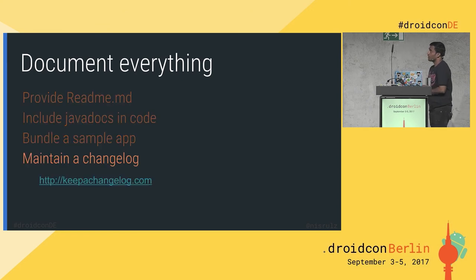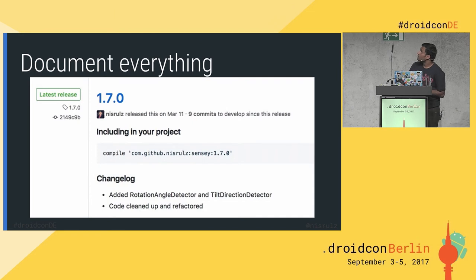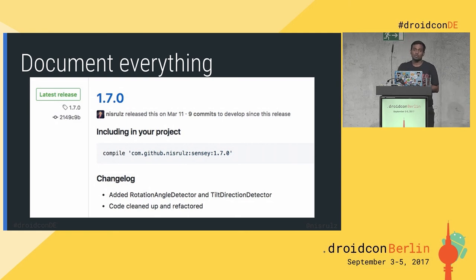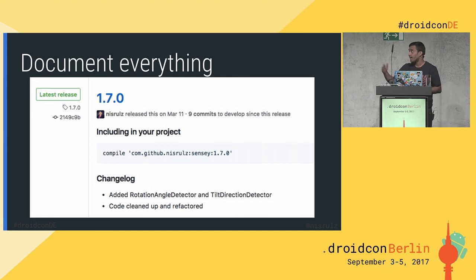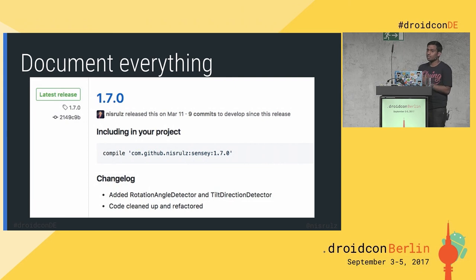Maintain a changelog. You can read online how to write a changelog. What I do in my Sensi library is include how to add the library and then list what was added or fixed in each version — for example, version 6.5 had certain functionality added or bugs fixed. You can do this on GitHub, GitLab, or any other Git repository hosting service.